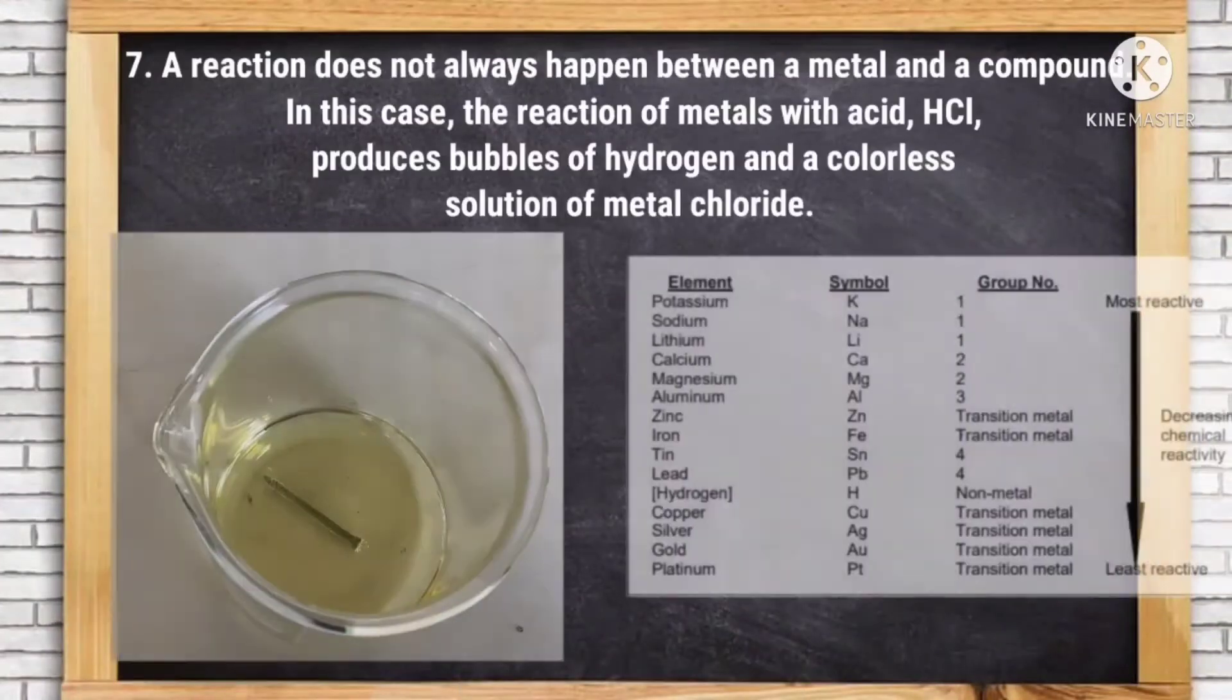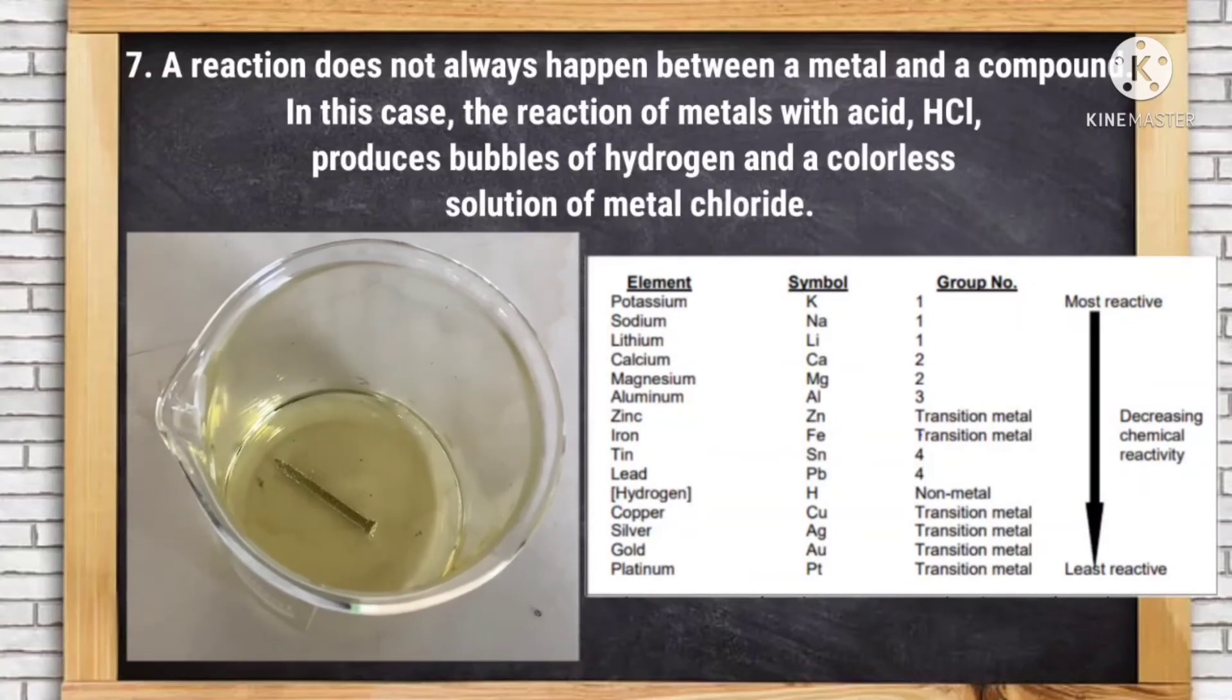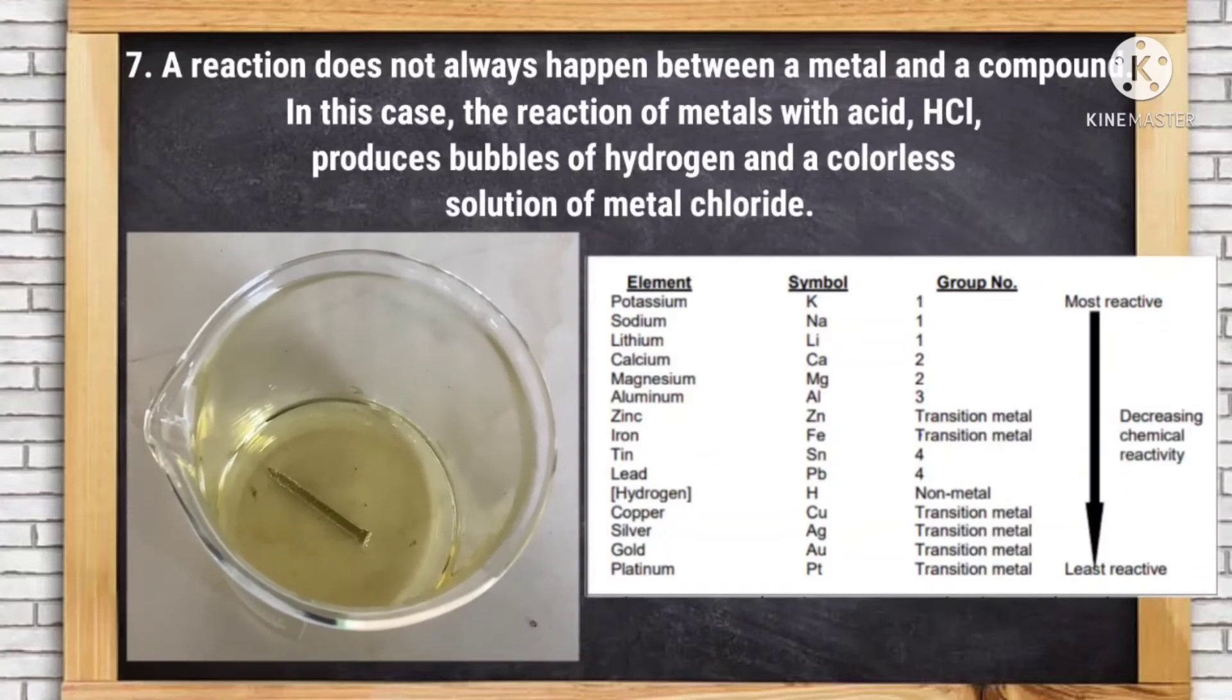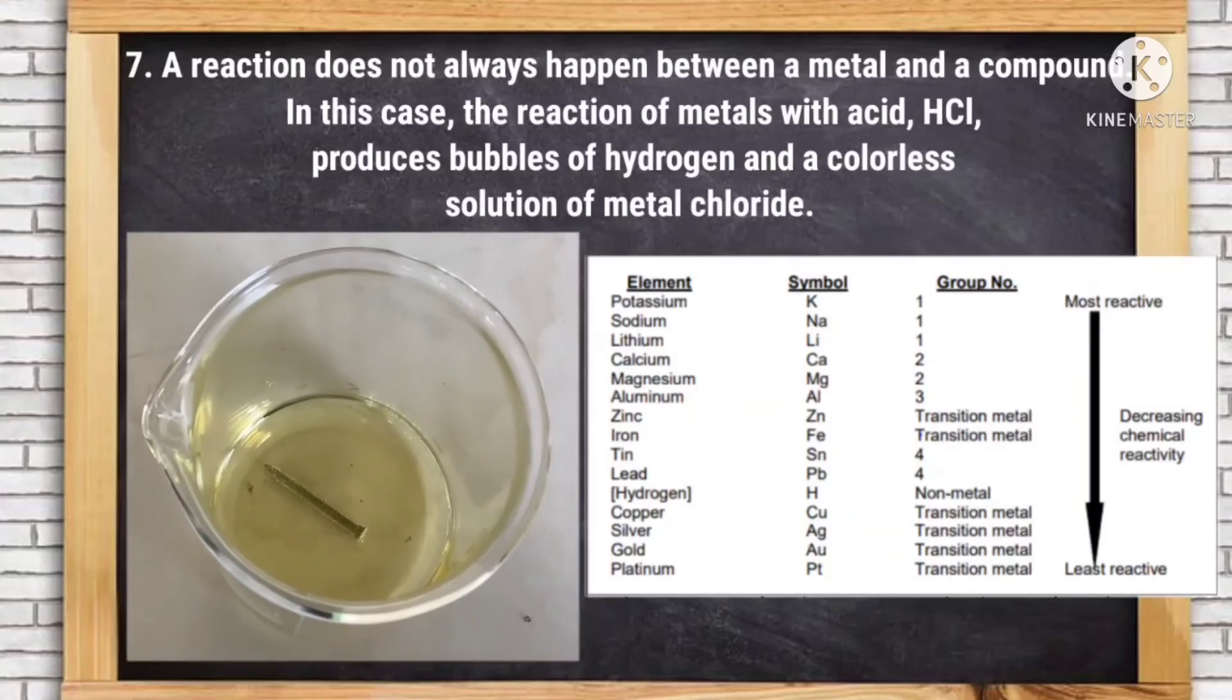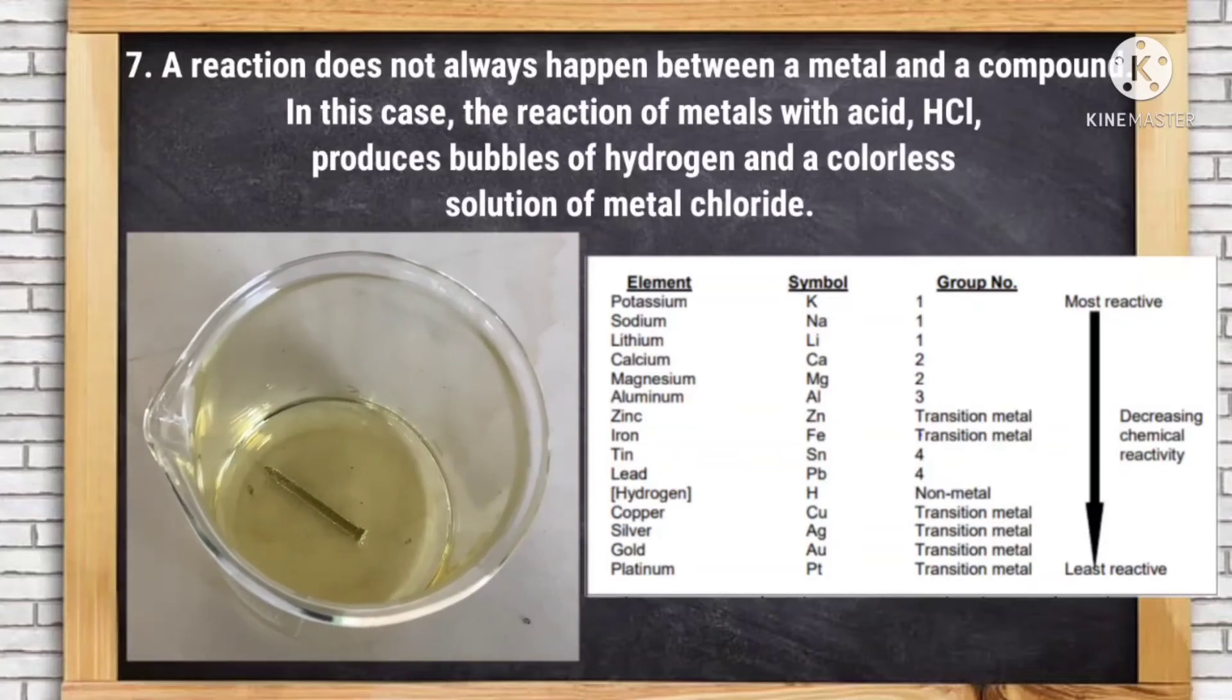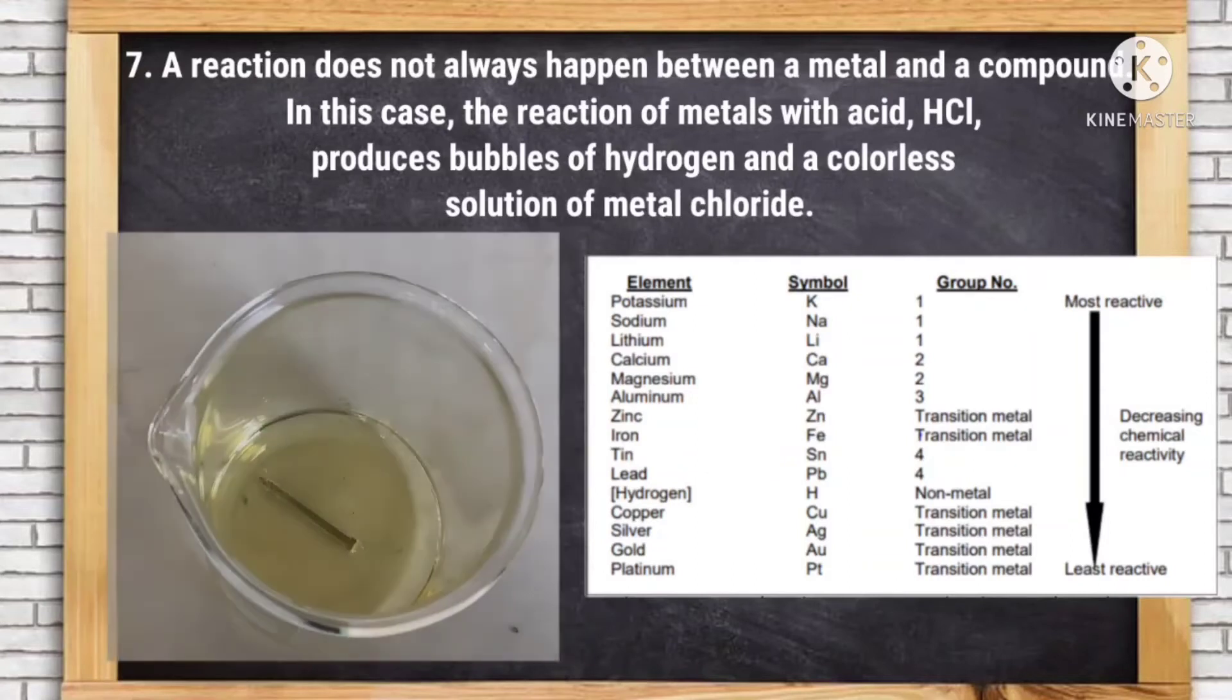Number seven, a reaction does not always happen between a metal and a compound. In this case, the reaction of metals with acid, hydrochloric acid, produces bubbles of hydrogen and a colorless solution of metal chloride.